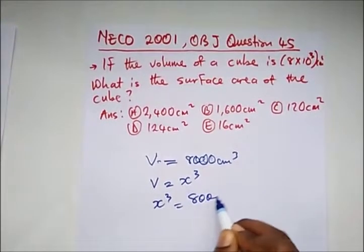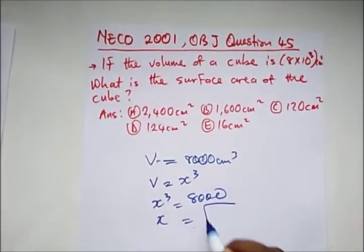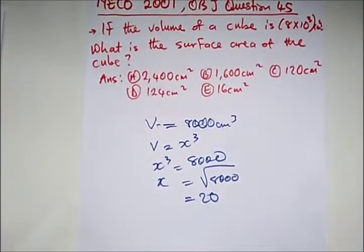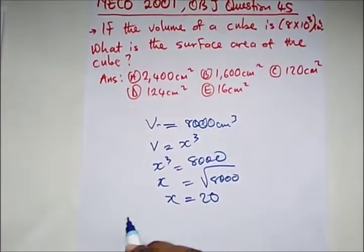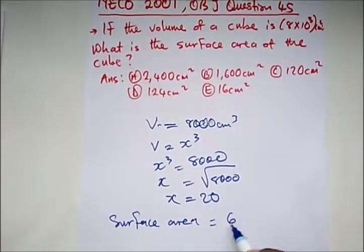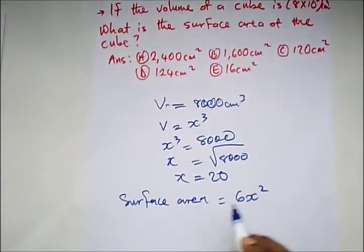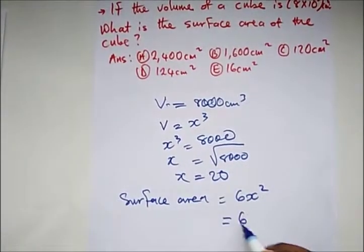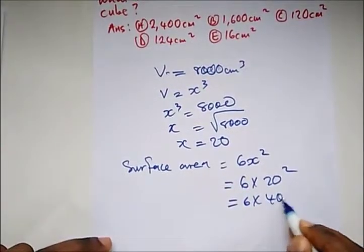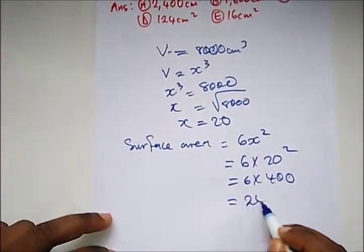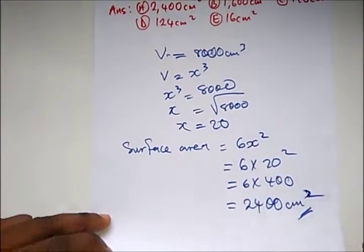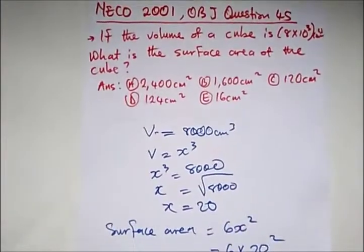x³ equals 8,000. x is the cube root of 8,000, which is 20. The surface area formula for a cube is 6x². We know x, so it's 6 times 20². We have 6 times 400, which gives us 2,400 cm². This is our correct answer, option A.